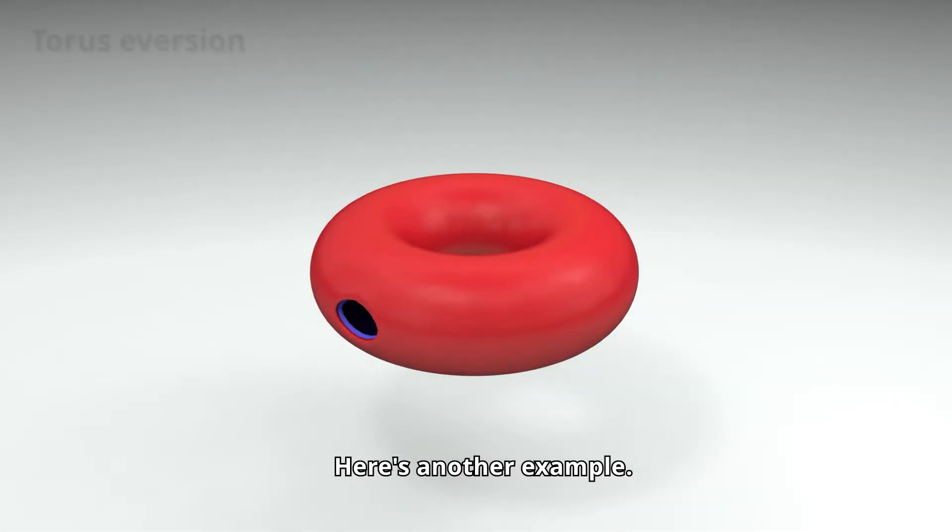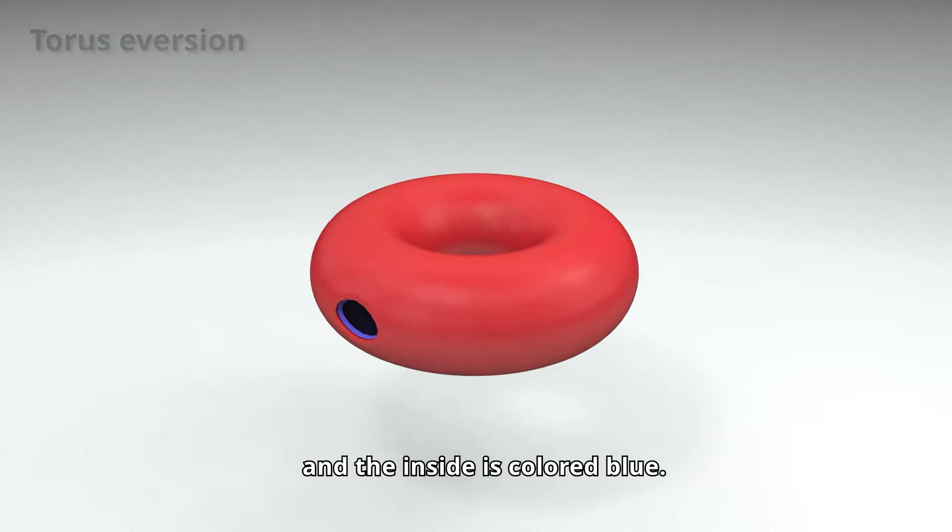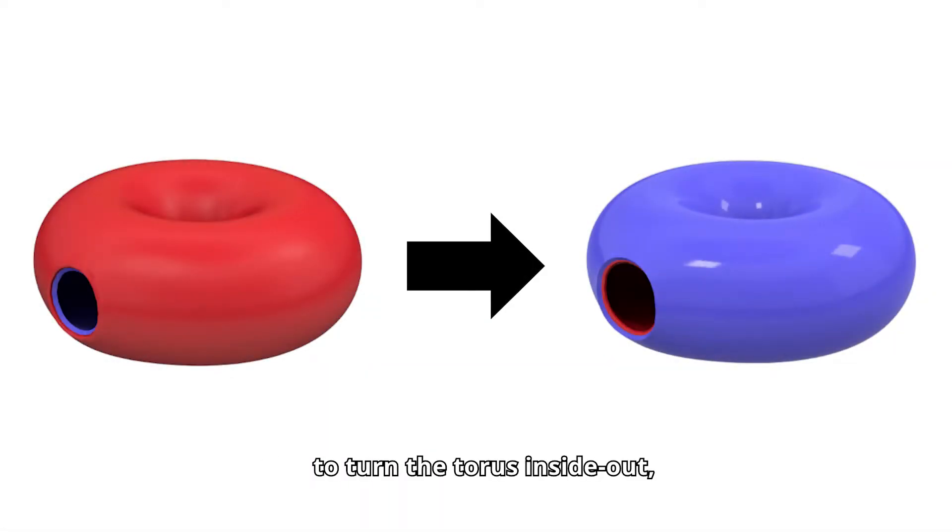Here's another example. The outside of this punctured torus is colored red, and the inside is colored blue. Can you think of a collision-free way to turn the torus inside-out so that the blue side is facing outward?